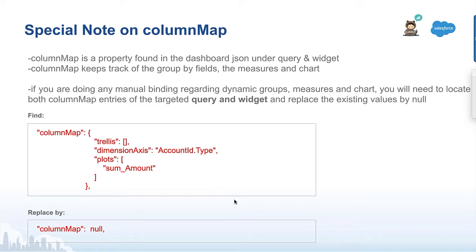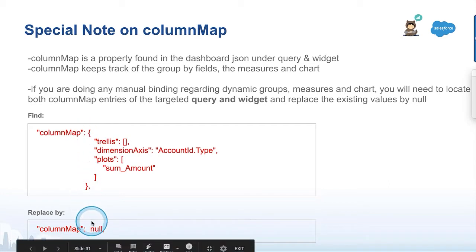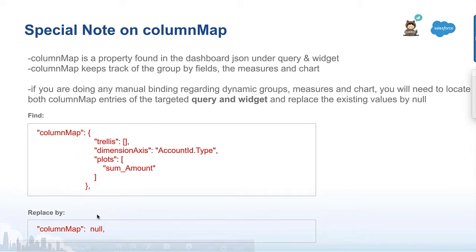The big change with the custom query is we are going to directly read the group by from the dataset we are using, so there is no mistake in the API name used. We don't have to go to the dataset and explore and copy the API name to guess what is the opportunity name, account name, or metric. As a reminder, since we are changing the group by and the measure of a query using binding, you will have to go to the column map section and replace the column map under that query and the widget properties with null.